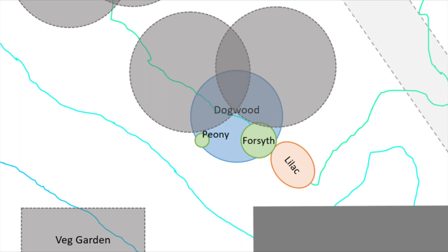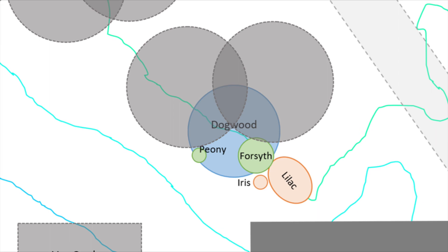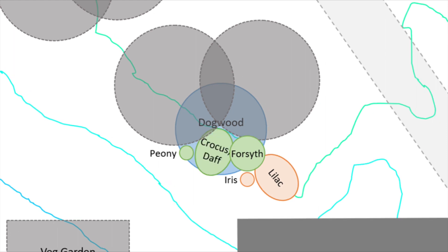The next tallest are forsythia and peony — both are more adaptable and can handle a range of light levels. I'm going to put them at the edge of the eventual dogwood mature canopy line. Initially they'll get full sun, but over time as the dogwood grows they'll become partially shaded, which they can handle. Iris needs full sun, so I'll tuck it outside of the dogwood canopy over by the lilac to ensure it gets that full sun — it's much shorter, so no worries about it blocking the view. Finally, crocus and daffodils will go in a large en masse planting underneath the dogwood canopy.